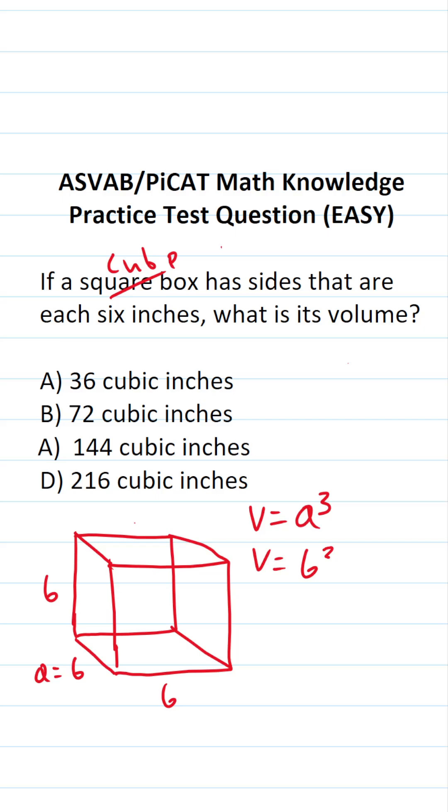This becomes six to the third power. This is the same thing as six times six times six. Six times six is 36. What is 36 times six? Six times six is 36. So bring down a six, carry a three.